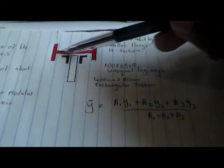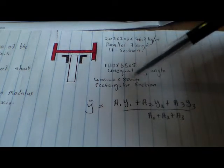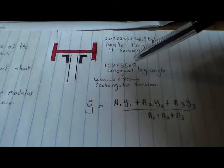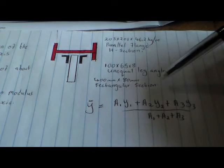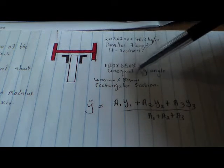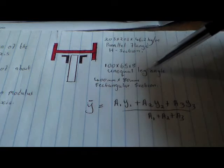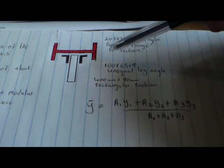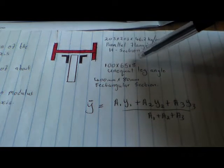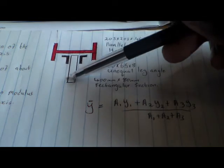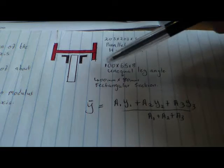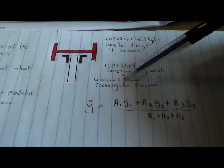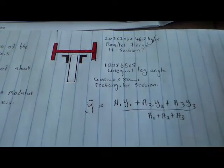So this is the edge section. And then we have the angle plate also. This is an equal leg angle, so this is 100 times 65 times 8. And then we also have the rectangular section, which is 400 millimeters times 880 millimeters.